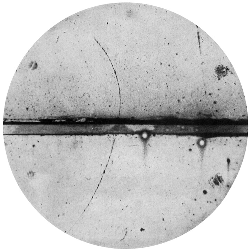The positron or antielectron is the antiparticle or the antimatter counterpart of the electron. The positron has an electric charge of plus 1 e, a spin of 1/2, and has the same mass as an electron. When a positron collides with an electron, annihilation occurs. If this collision occurs at low energies, it results in the production of two or more gamma-ray photons. Positrons can be created by positron emission radioactive decay, or by pair production from a sufficiently energetic photon interacting with an atom in a material.